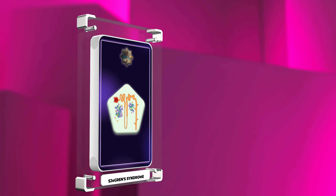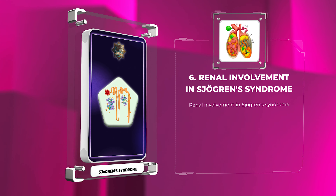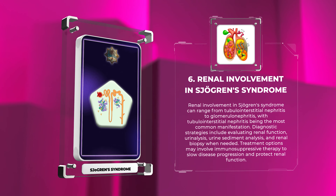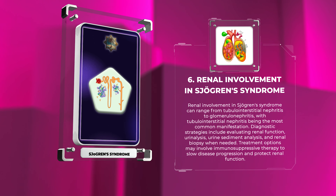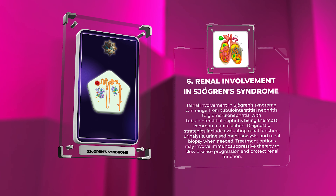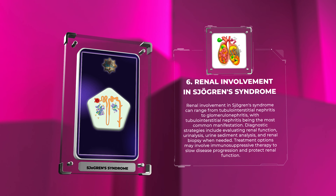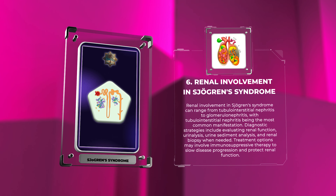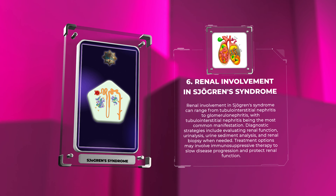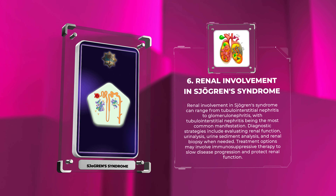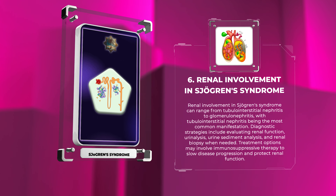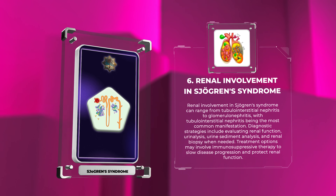Renal involvement in Sjogren's Syndrome can range from tubulointerstitial nephritis to glomerulonephritis, with tubulointerstitial nephritis being the most common manifestation. Diagnostic strategies include evaluating renal function, urinalysis, urine sediment analysis, and renal biopsy when needed. Treatment options may involve immunosuppressive therapy to slow disease progression and protect renal function.